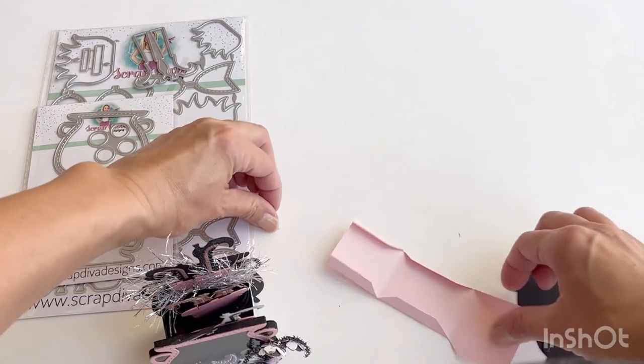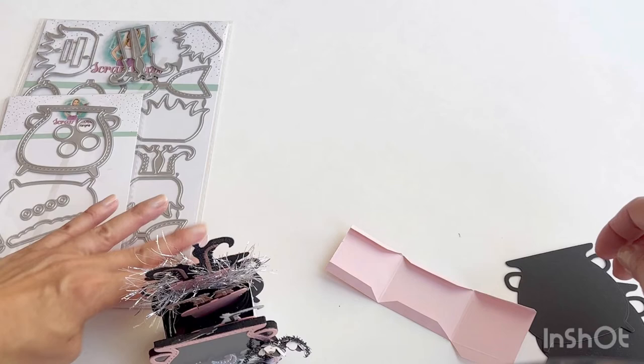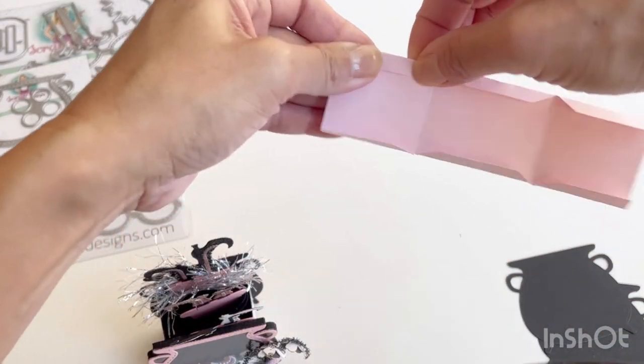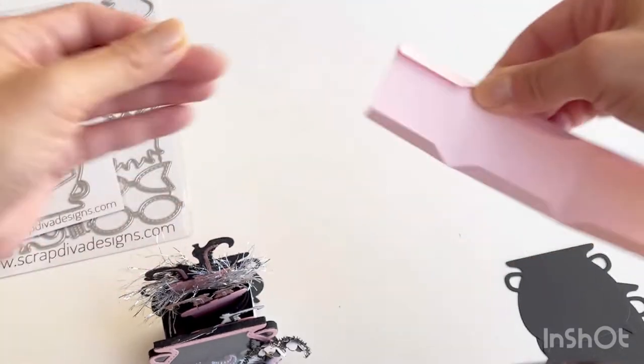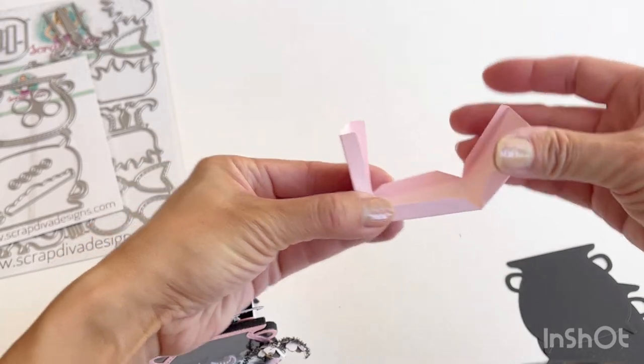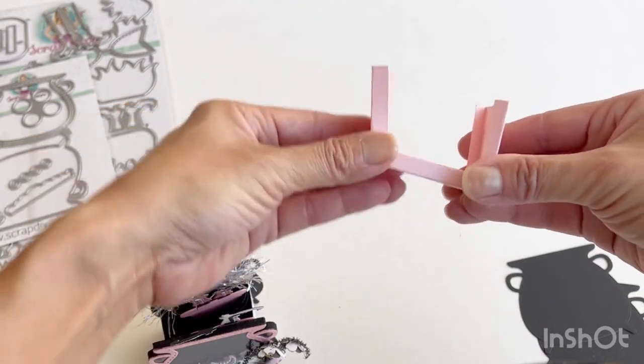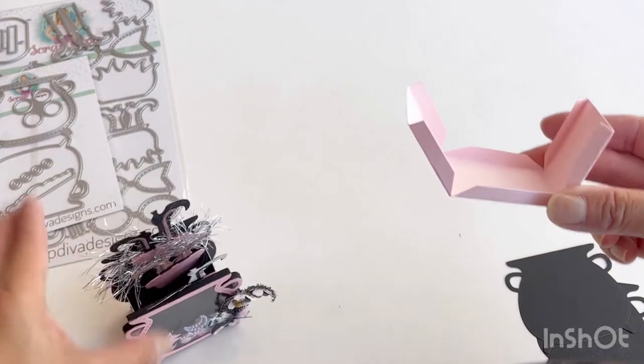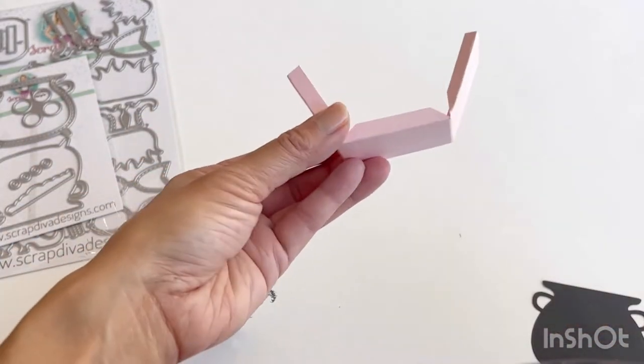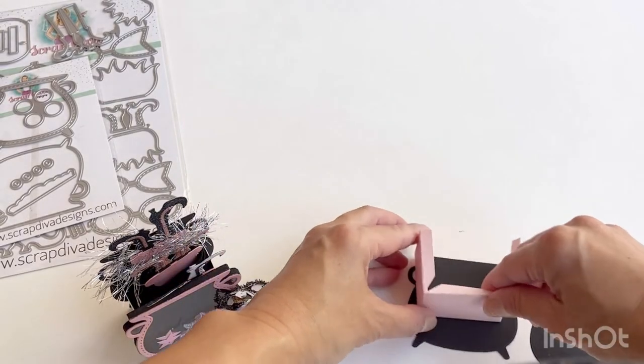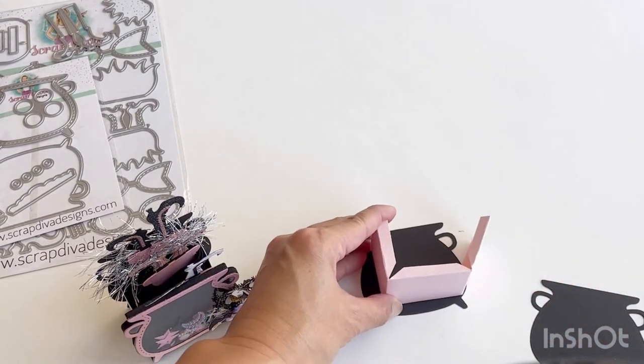What I use for my project, you can just use tape if you want to, but I used wet glue. Basically this is now the container portion of the Cauldron, and what you'll do is you'll glue that on to your Cauldron.